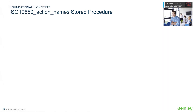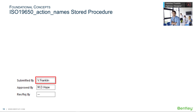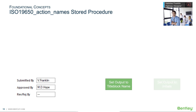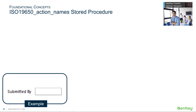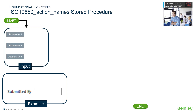Let's dig into the iso19650 action name stored procedure. The stored procedure will return an update value to three attributes: submitted by, approved by, and revised or rejected by. The goal of the stored procedure is to output one of three formats into these attributes: the user's title block name, the user's initials, or three hyphens to show that the field is empty. The stored procedure requires that the lookup user attributes table is created and populated. To understand how the stored procedure works, let's look at an example for the submitted by role. The stored procedure uses three parameters, and the first parameter is a username.